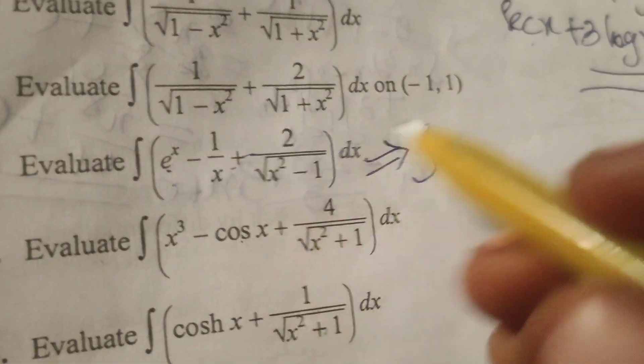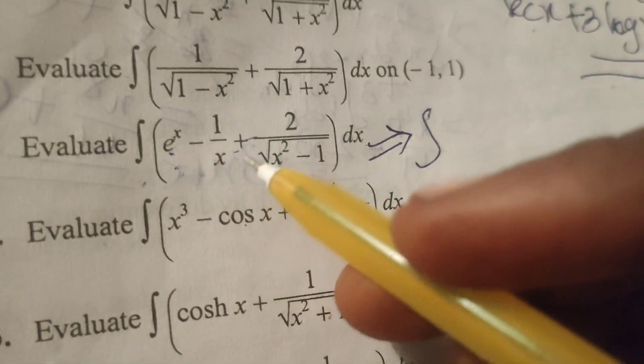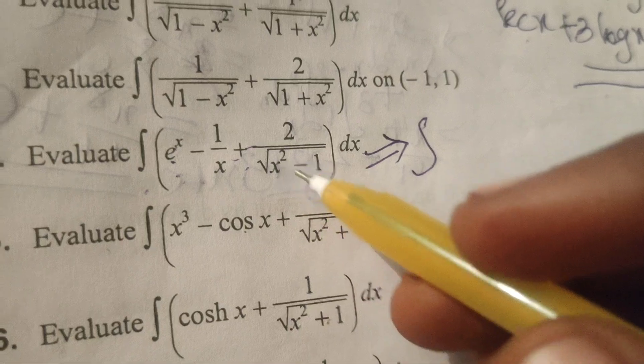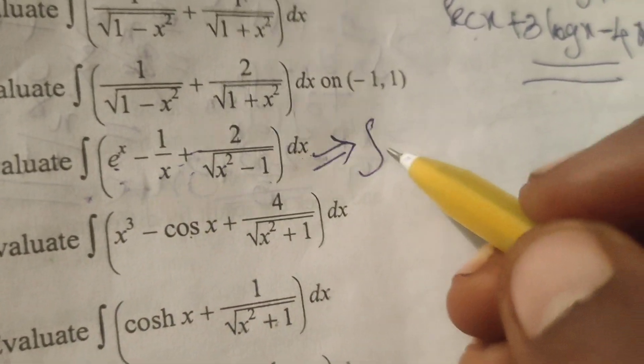Now separate this one by one. Integral of e to the power x minus 1 by x plus 2 by root of x squared minus 1 dx. Separate one by one here.